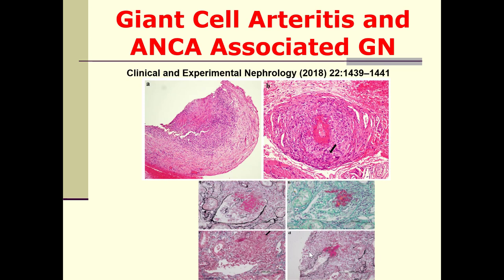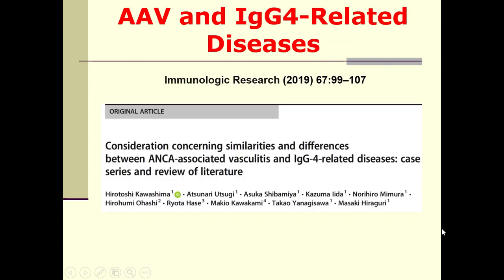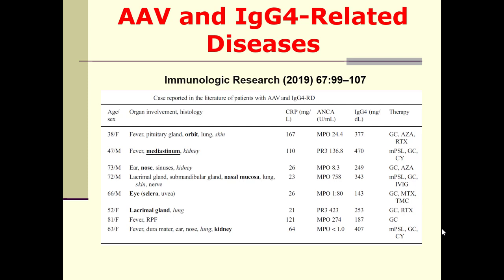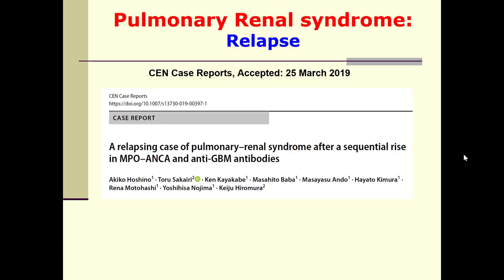ANCA-associated vasculitis may be encountered alongside giant cell arteritis in one patient — this temporal artery biopsy shows giant cell arteritis and necrotizing glomerulonephritis coexisting. ANCA-associated vasculitis also shares major similarities with IgG4-related disease; we should search for IgG4 manifestations such as orbital involvement, mediastinum, nose, and lacrimal gland affection, monitoring ANCA and IgG4 to select the best treatment.